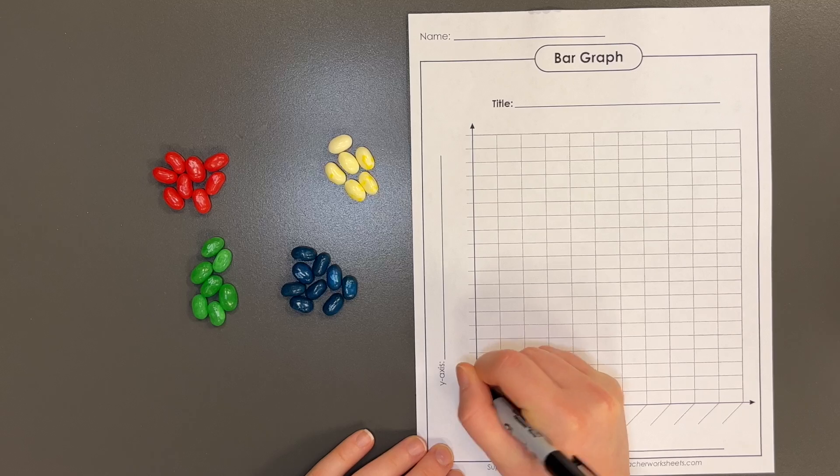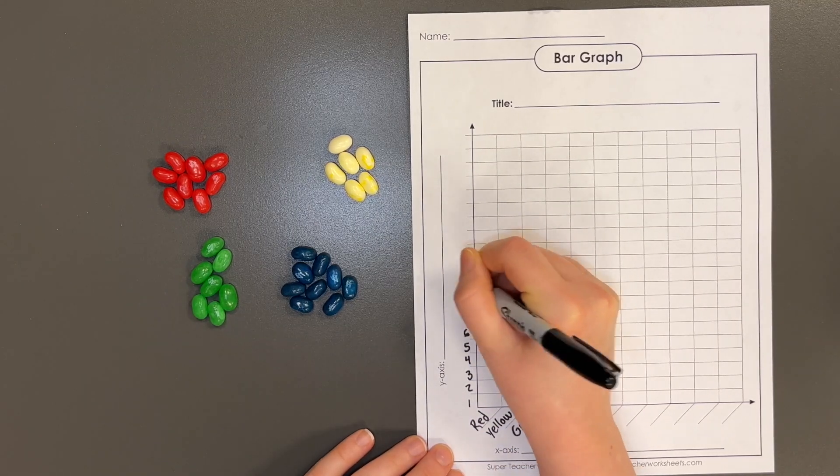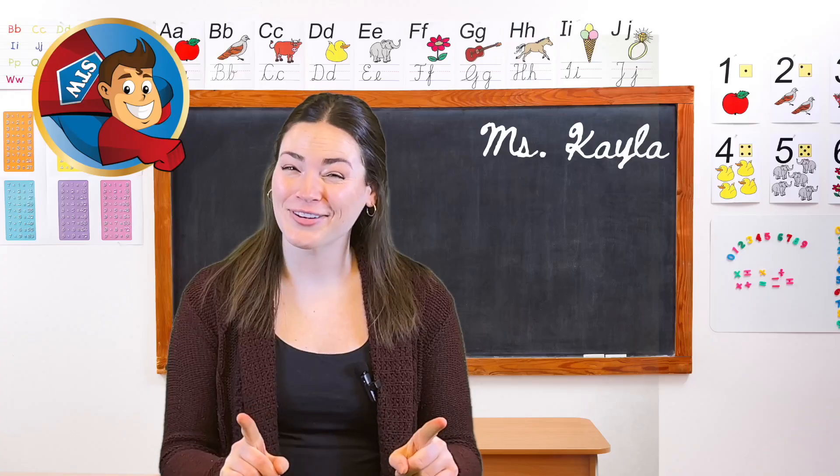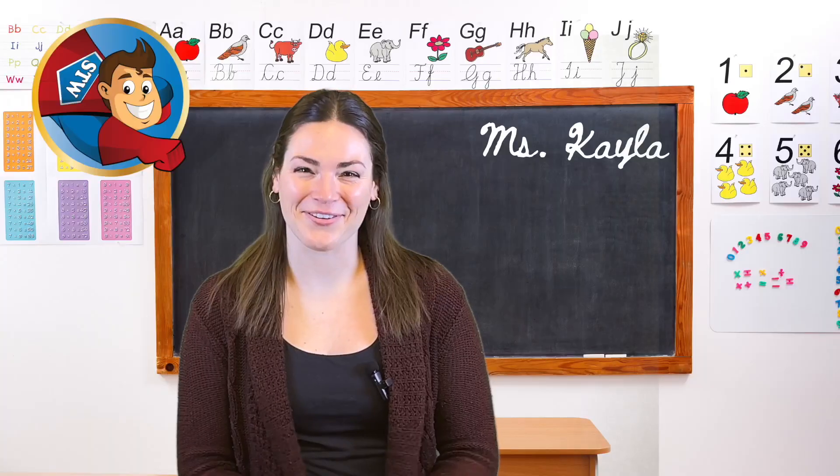Then decide on the range for the vertical axis representing the quantities of jelly beans for each color. Don't forget to have your students create a title for their graph.